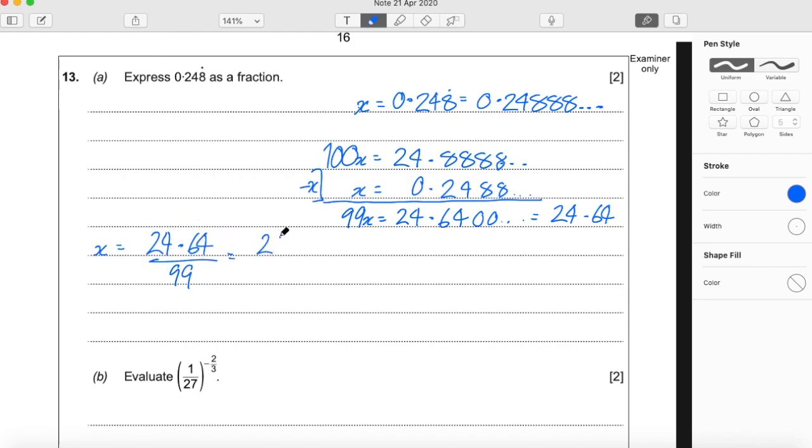So times by 100 both sides gives us 2,464 divided by 9900. And that's the correct way to write a fraction.